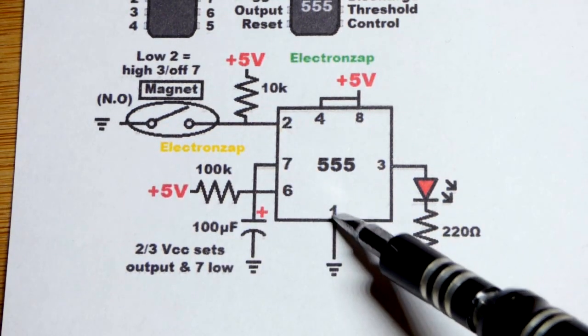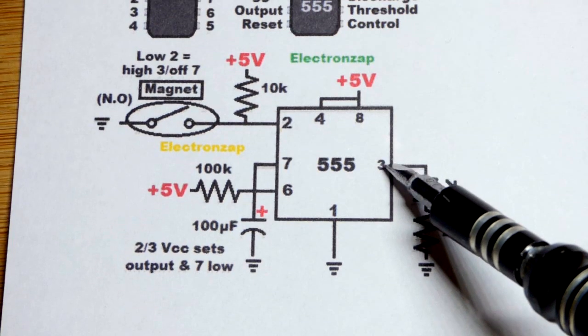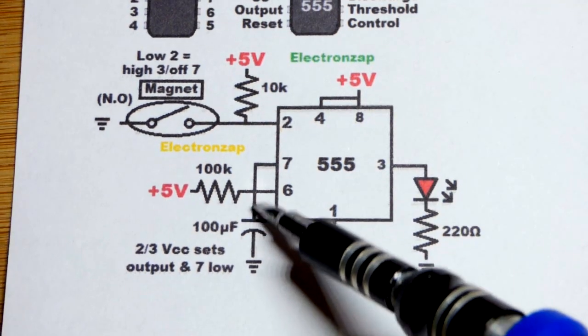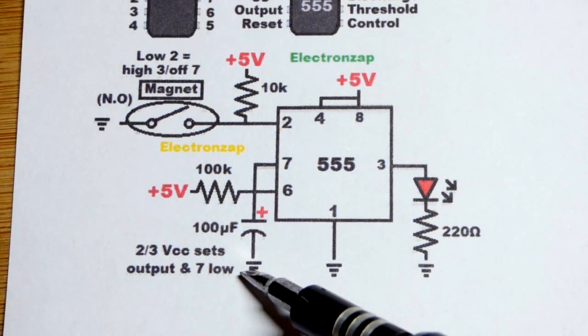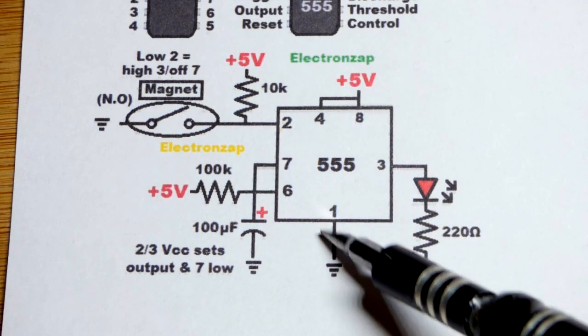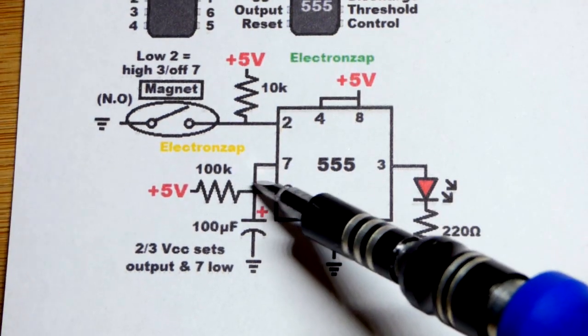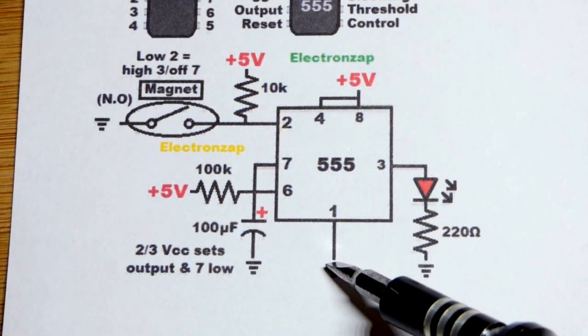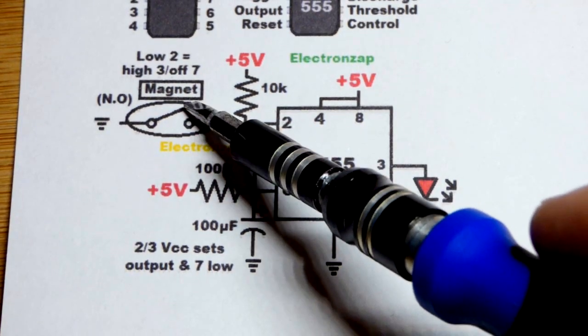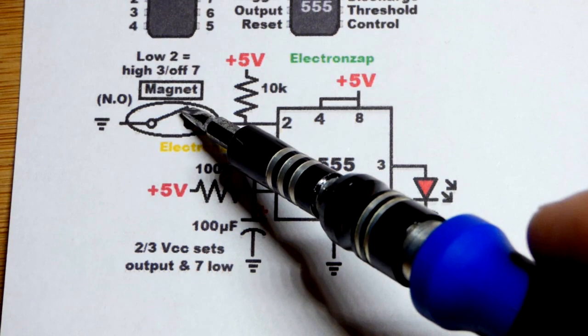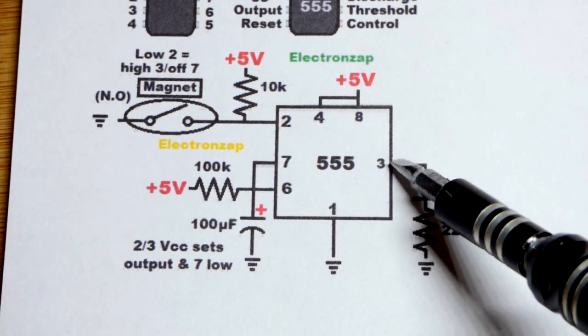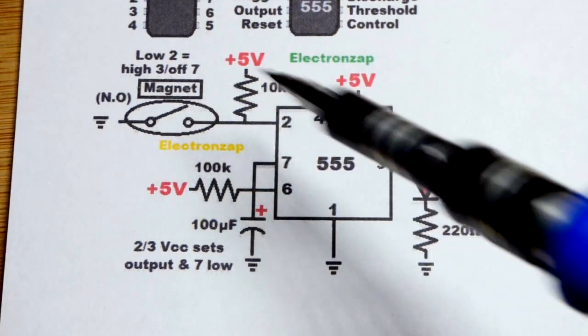Once the capacitor gets to two-thirds supply voltage, then it instantly discharges. Pin seven connects to ground, also the output goes back to ground. The capacitor instantly discharges, both sides will be connected directly to ground. It can't charge again because current is being pulled to ground on both sides at all times. The switch has to be open though by that point. If the switch is still closed, that's going to hold the output high until the moment you open the switch.